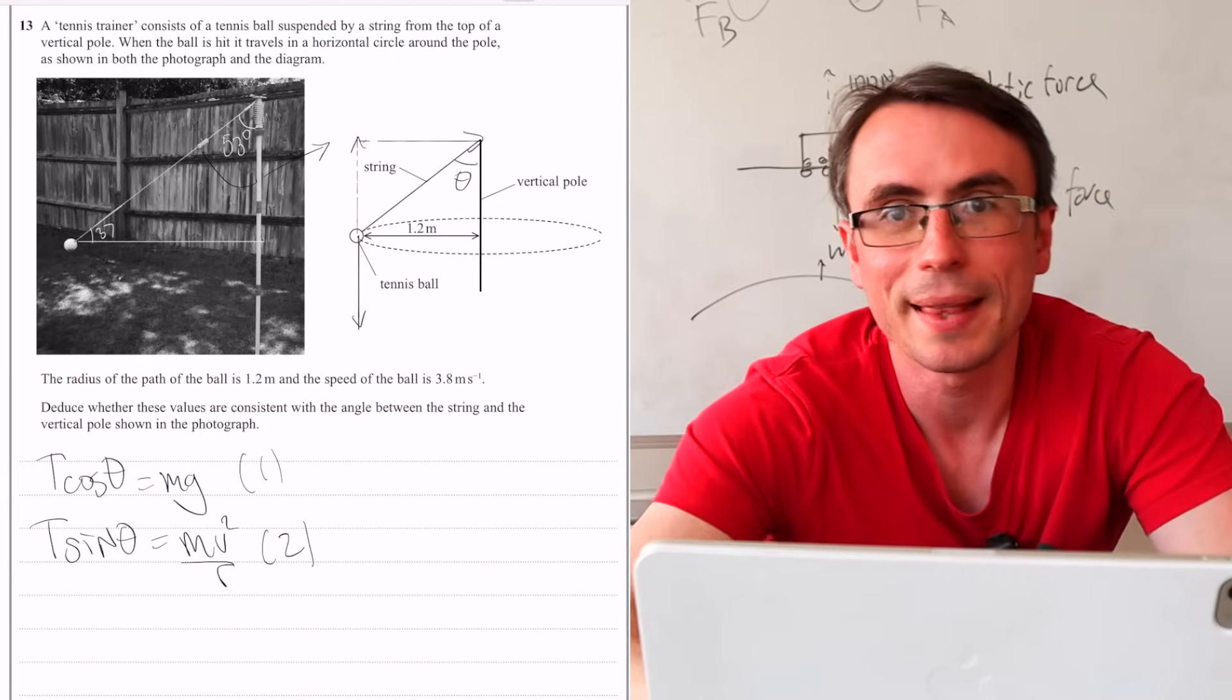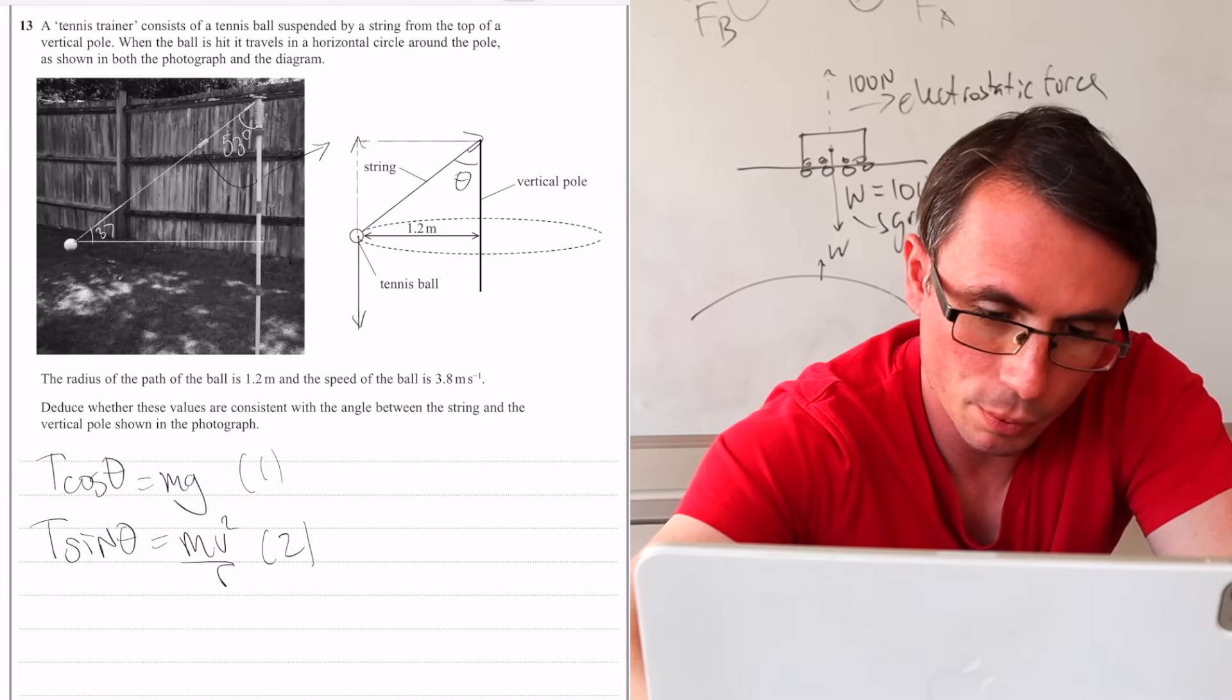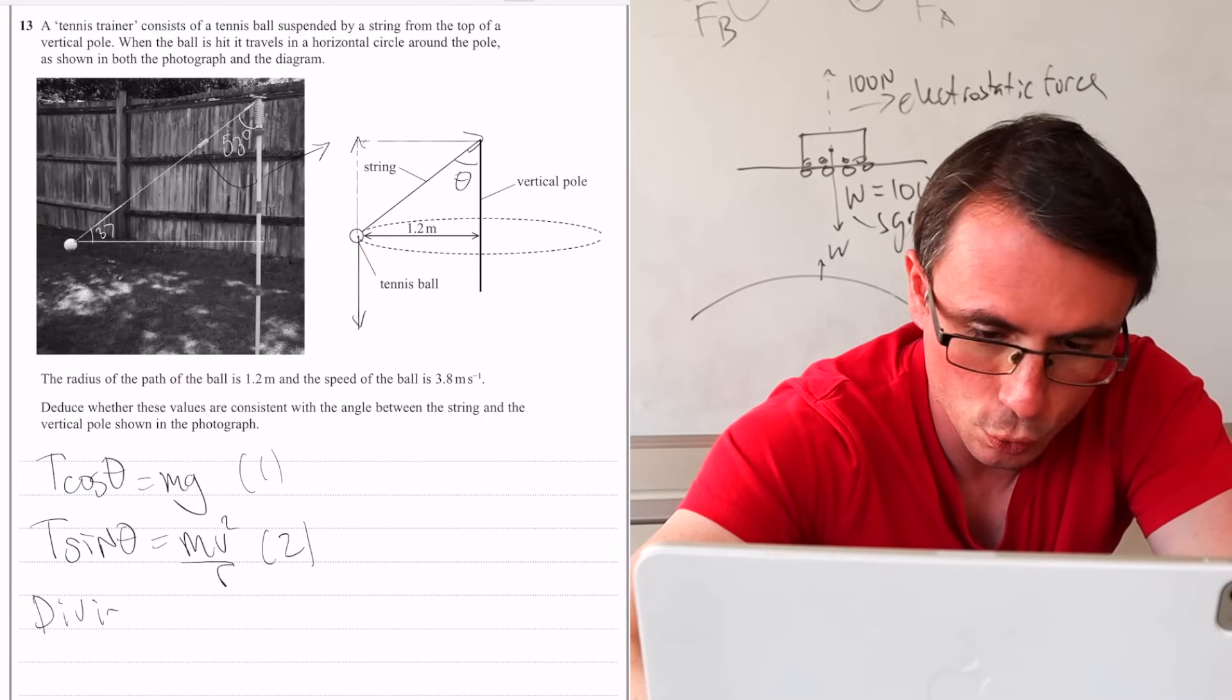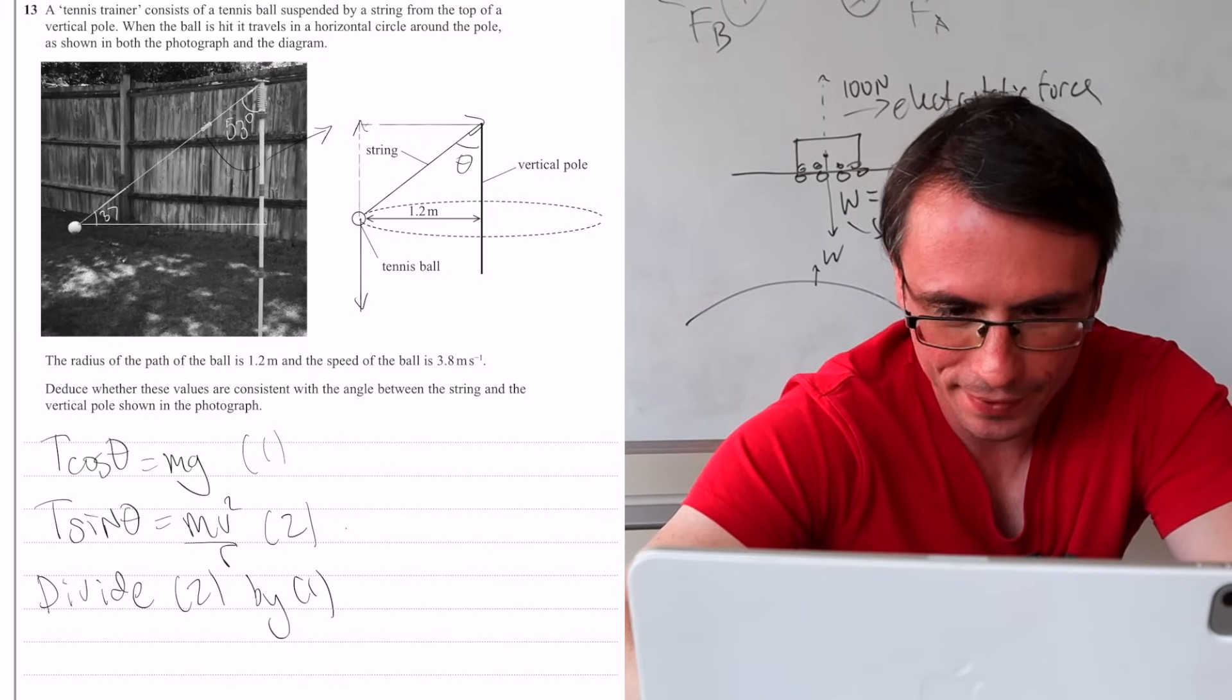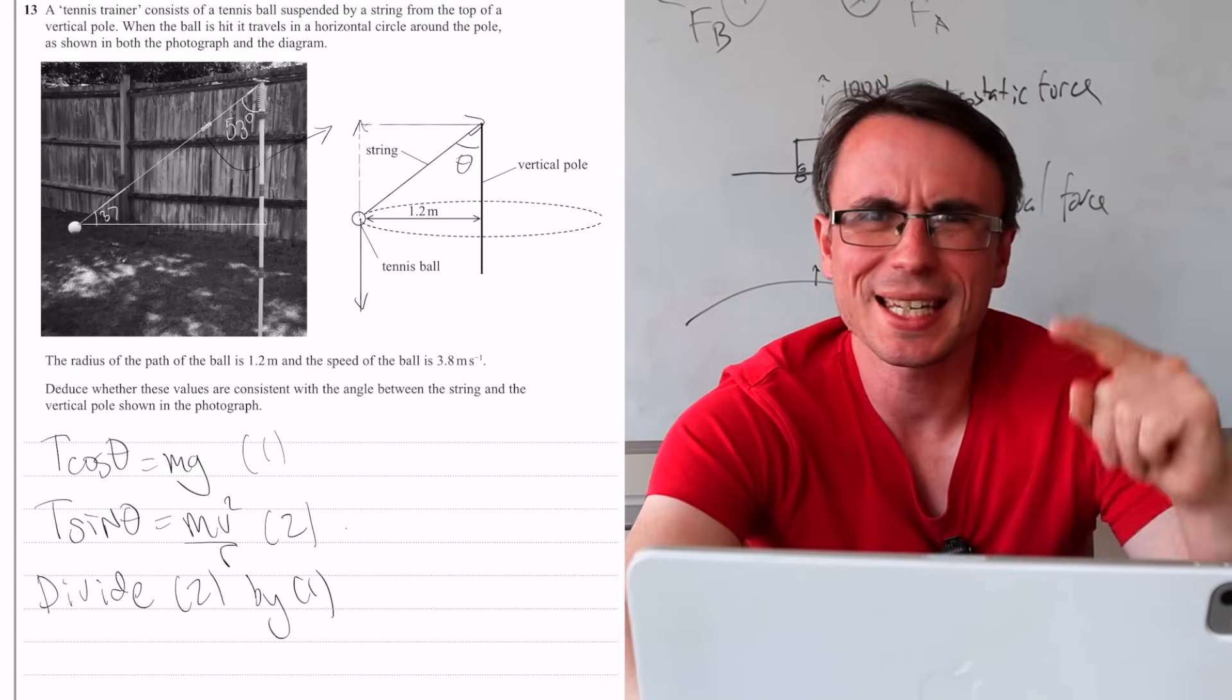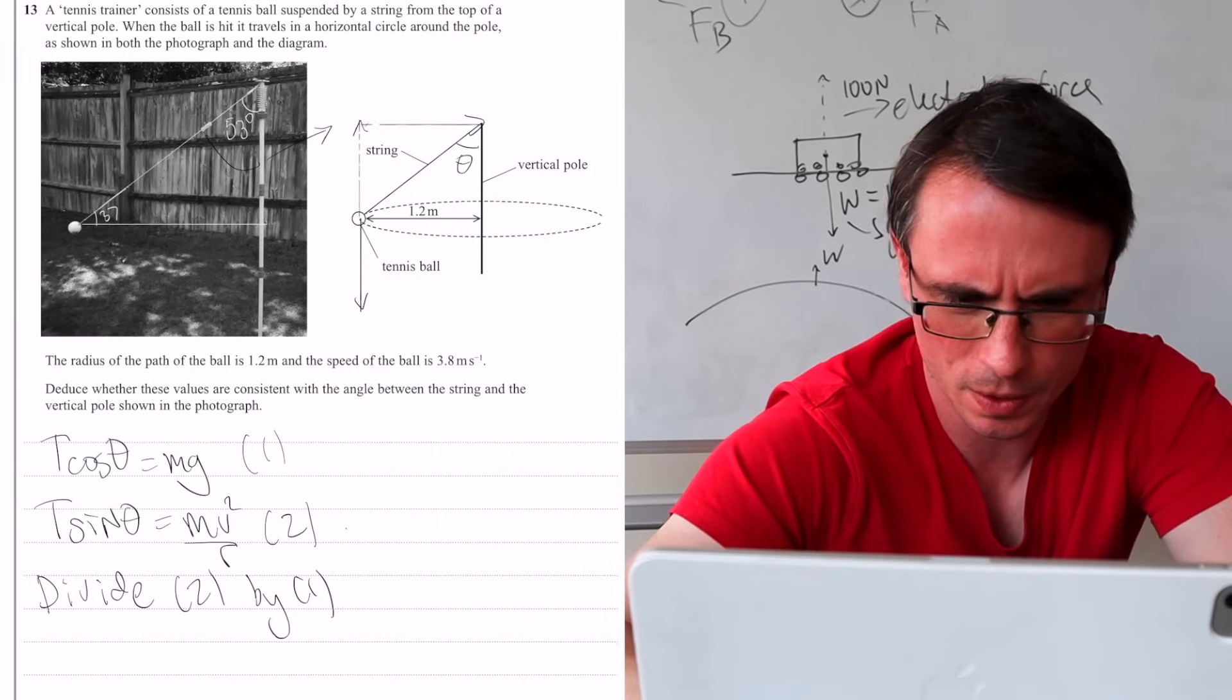Call this equation one, call this equation two. And then the shortcut of dealing with this would be to divide two by one. So if we divide two by one on the left hand side, we're going to get T sine over cos.